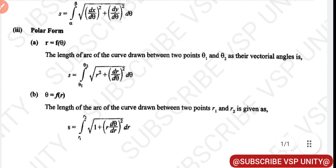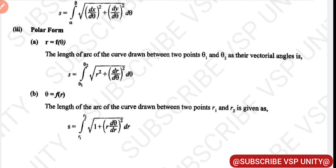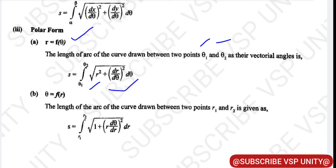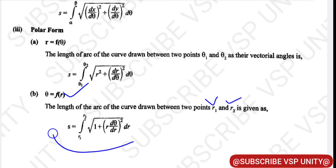If the given curve is in polar form — that is, r is equal to f of theta — the length of the arc between two points theta 1 and theta 2 is: s is equal to integral from theta 1 to theta 2 of under root of r squared plus (dr/dθ) squared, dθ. If the given question is like theta is equal to f of r, then the length of arc between r1 and r2 is: s is equal to integral from r1 to r2 of under root of 1 plus r squared times (dθ/dr) squared, dr.